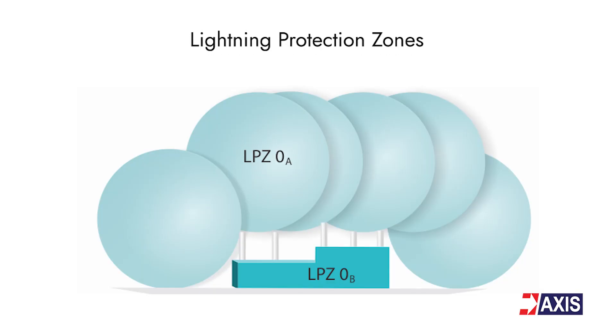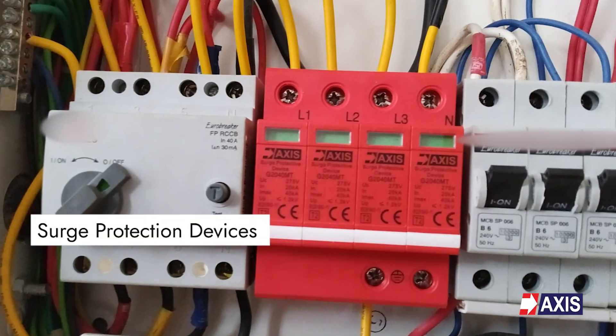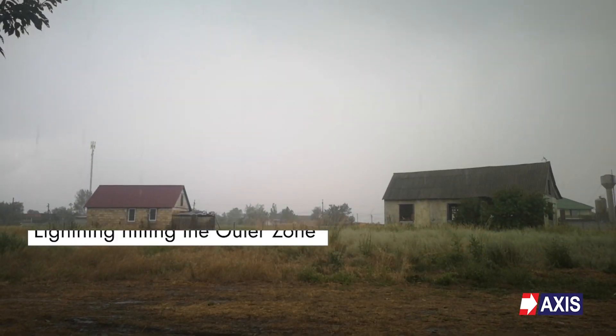Part 4 also introduces lightning protection zones. The central idea is to limit current and voltage surges by dividing the structure into different risk zones. These zones are nested within each other, with the most sensitive zones being the innermost. An assessment is performed for each zone to select the most appropriate protection at the optimum cost. By using standard appropriate solutions like lightning arrestors and surge protection devices, the effects of lightning hitting the outer zone are meant to be reduced before they can affect people or sensitive equipment in the inner zones.